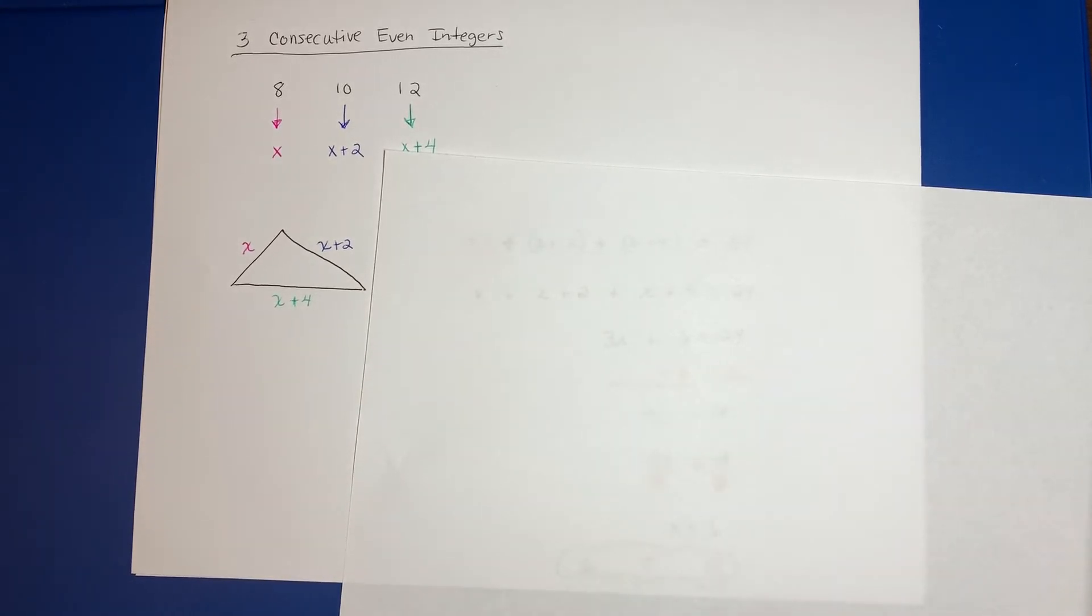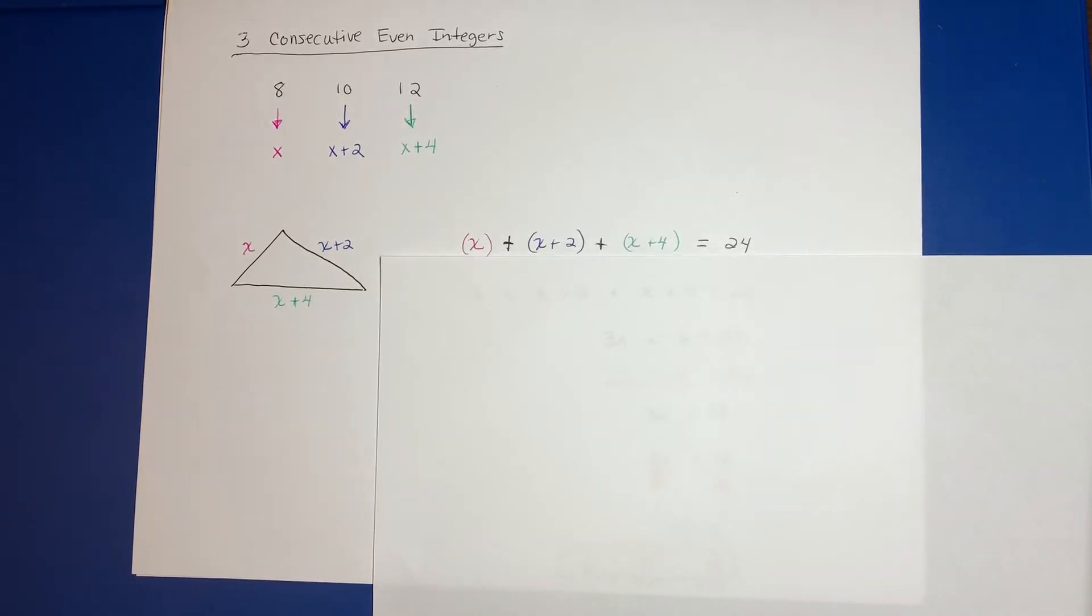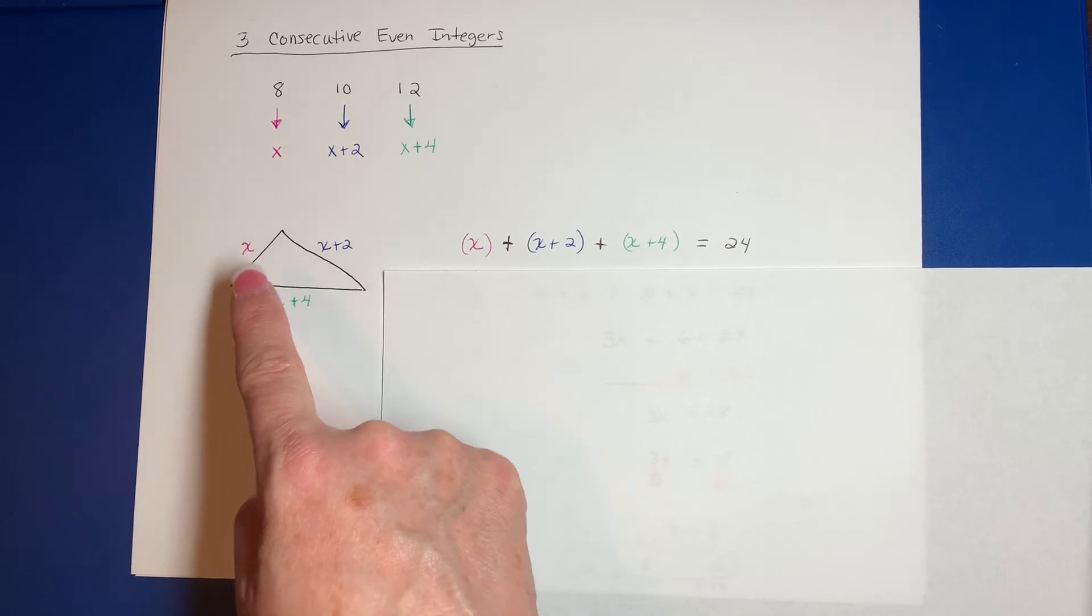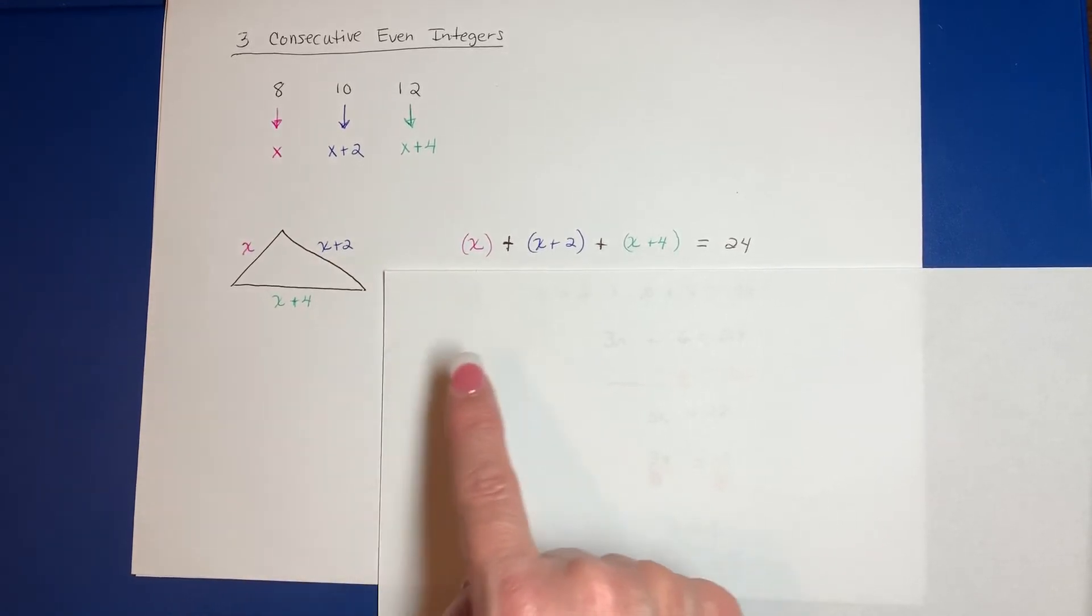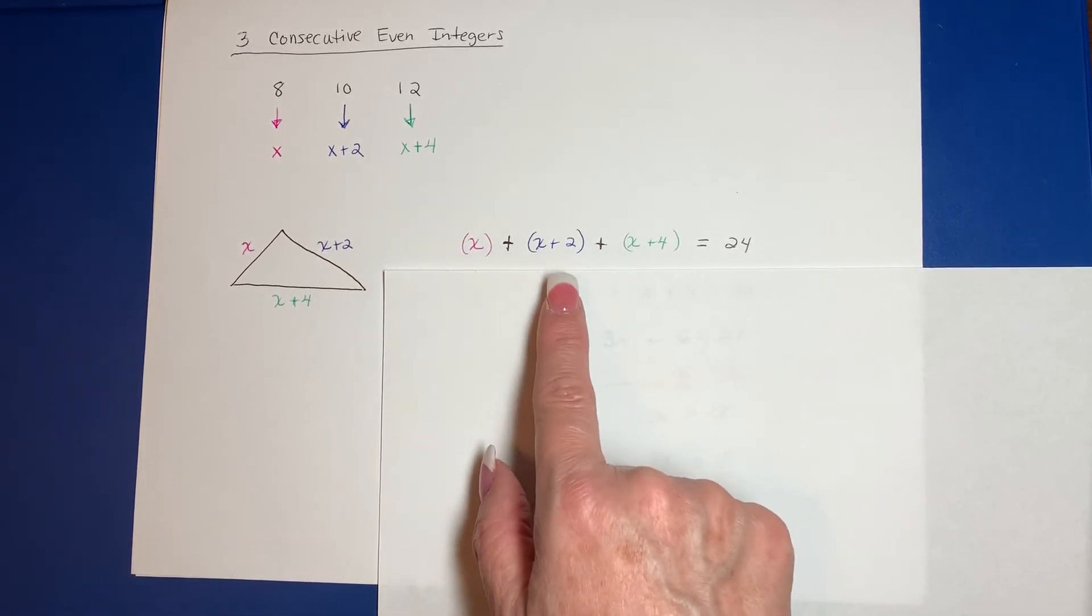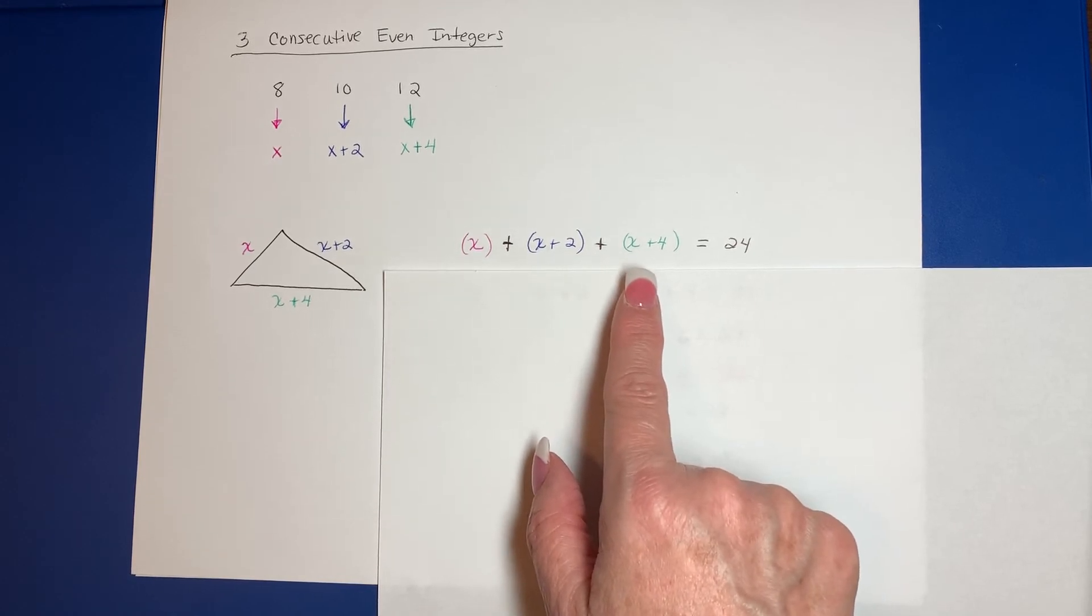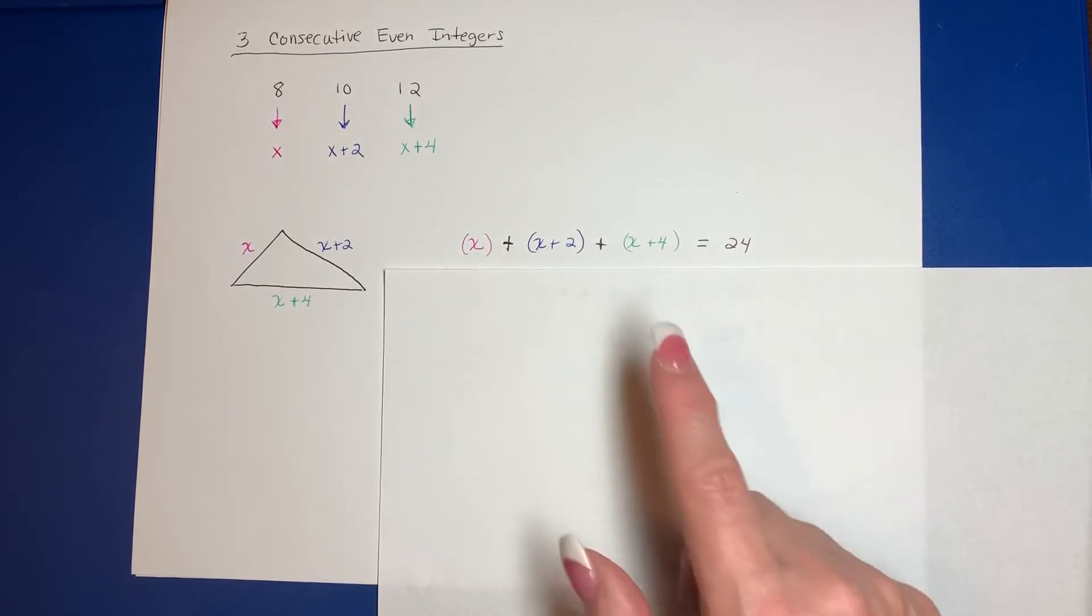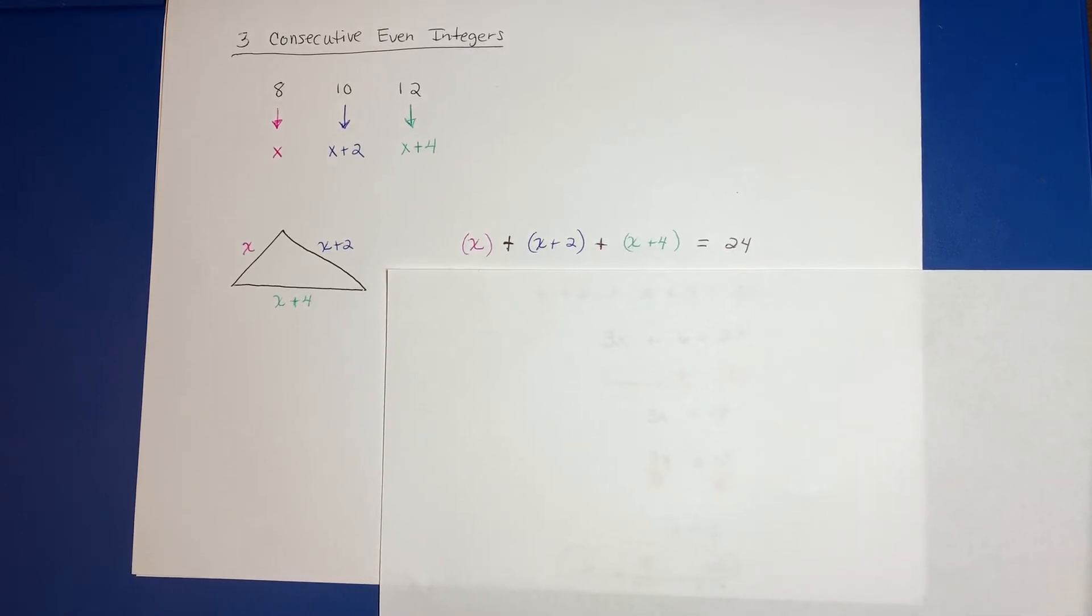Then I came up with the equation. If I'm looking for perimeter, that's just the distance around the triangle, so just add up the three sides. So I added X to X plus 2 to X plus 4, and that added up to 24.